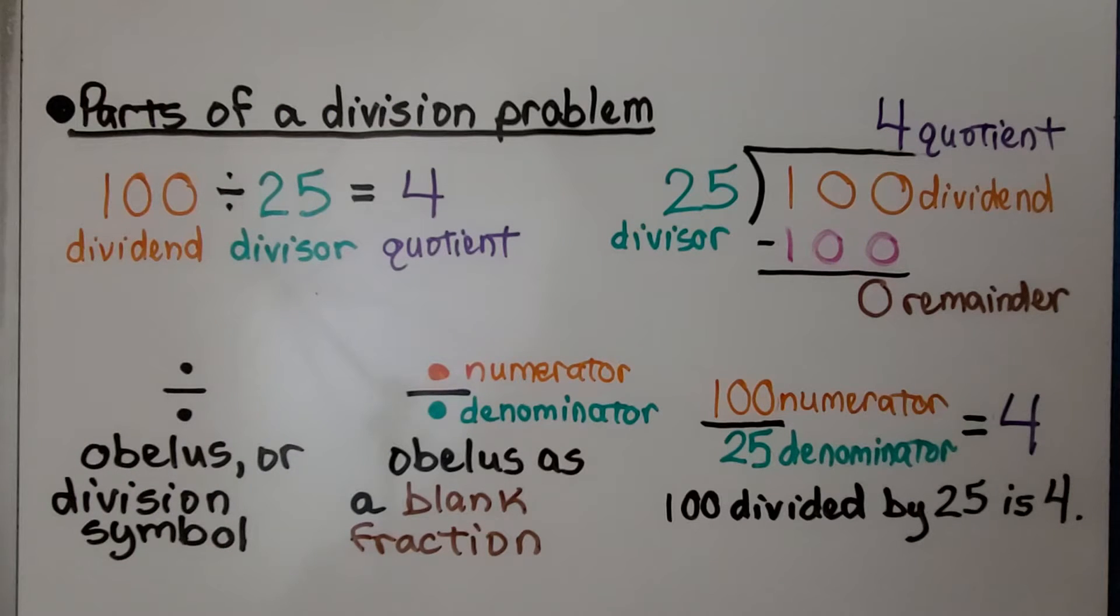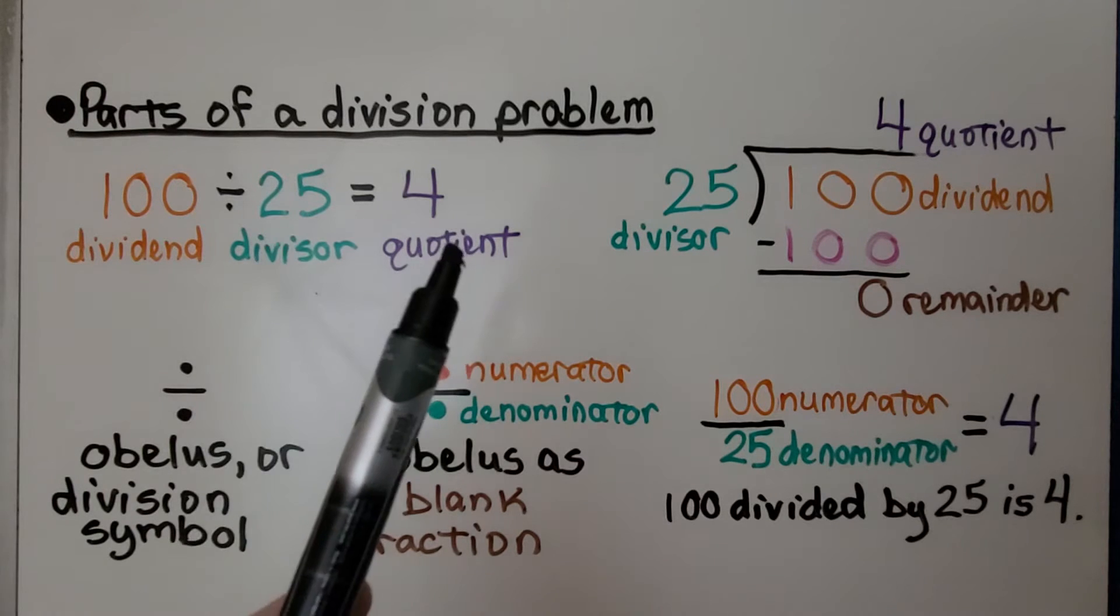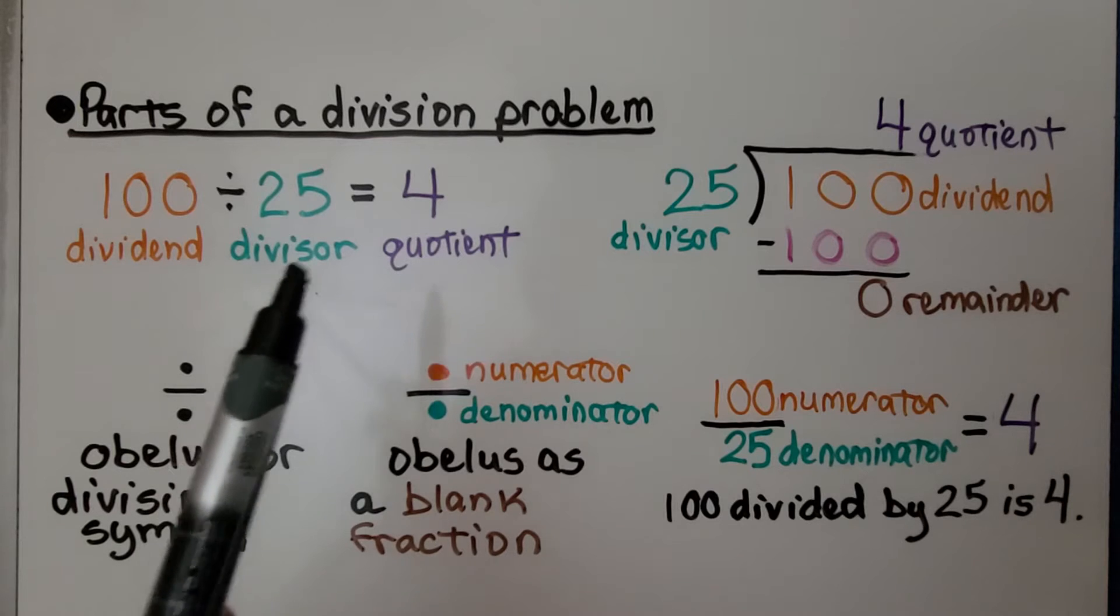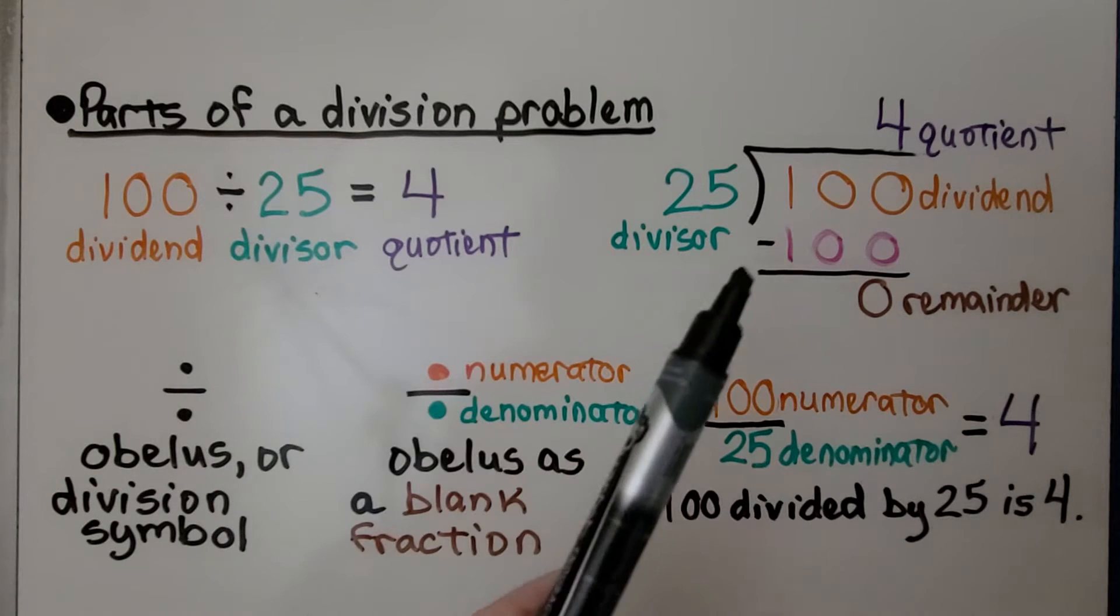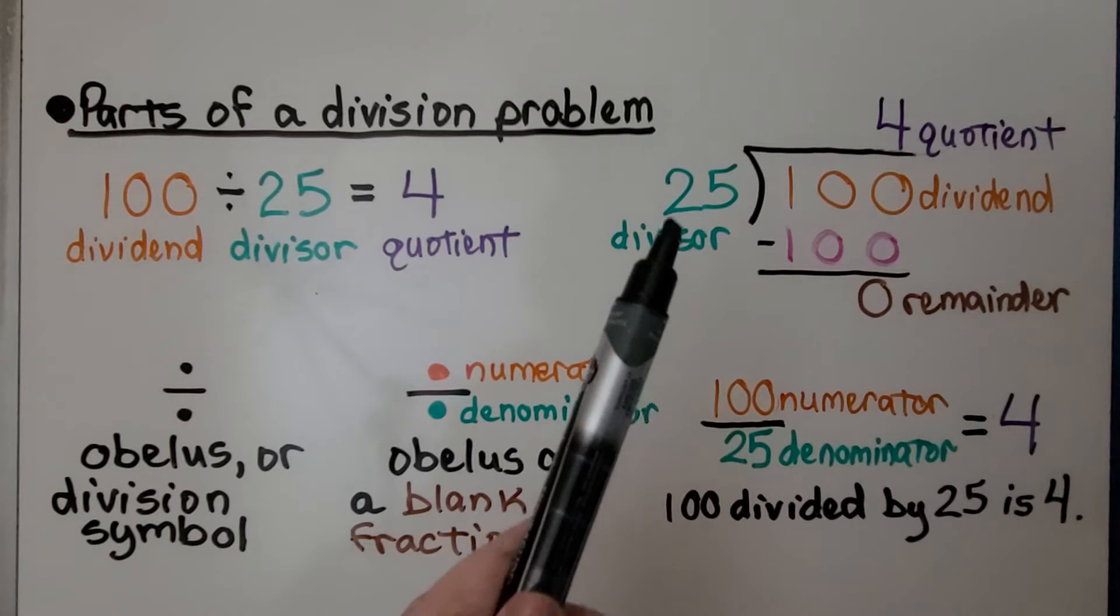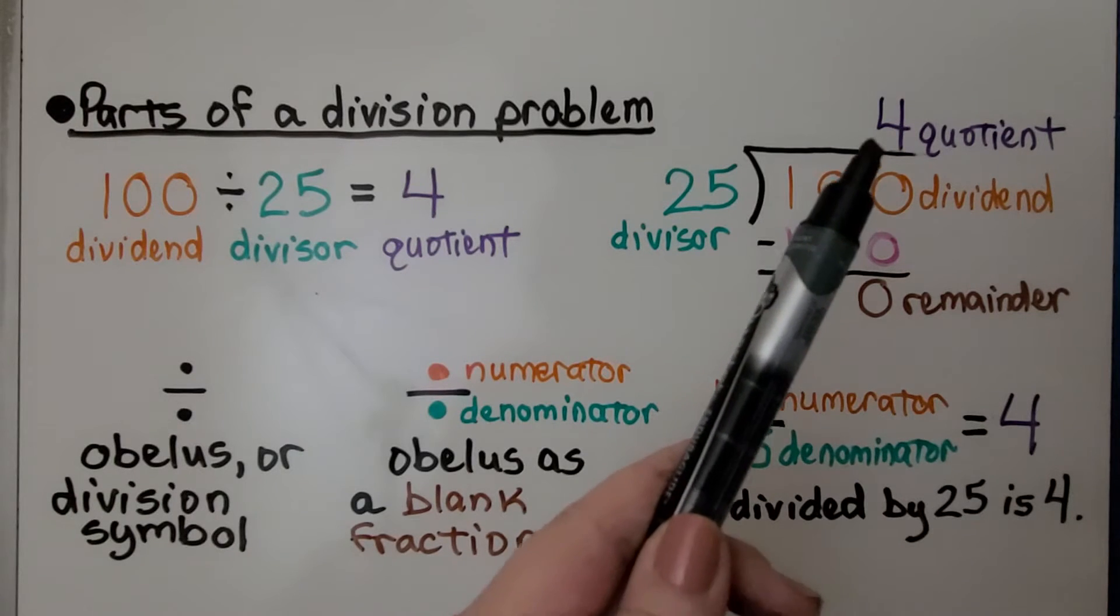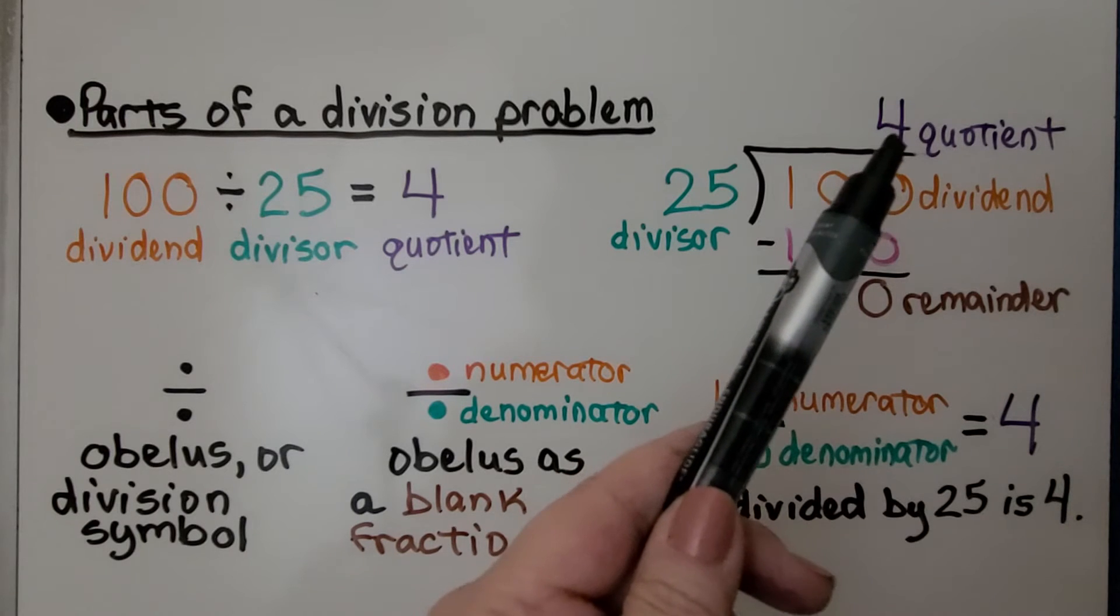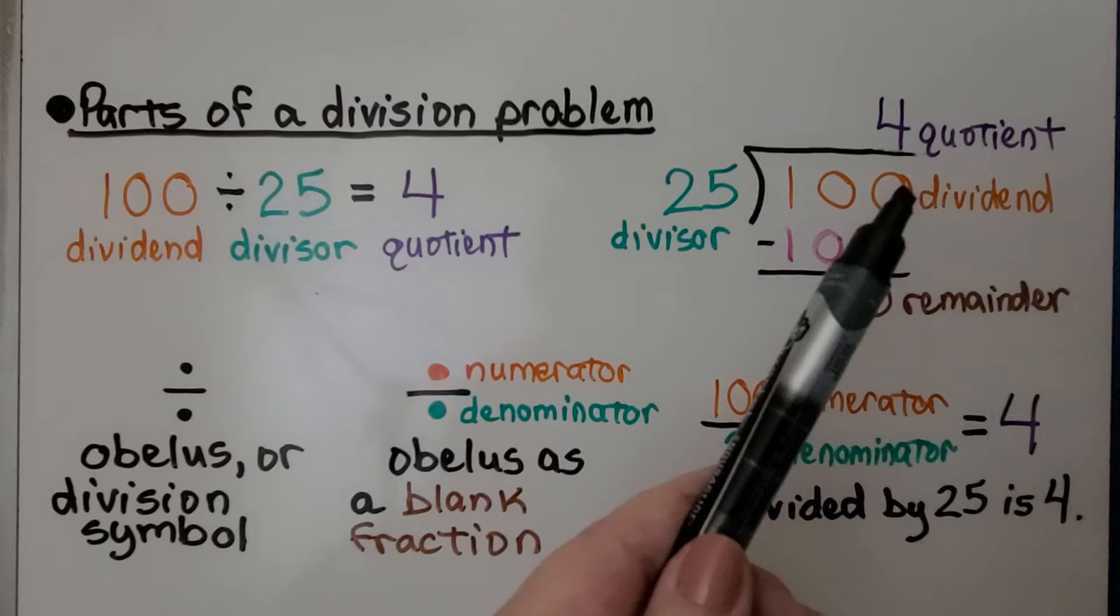Let's start by reviewing the parts of a division problem. Here we have 100 divided by 25 is equal to 4. 100 is the dividend, 25 is the divisor, and 4 is the quotient. When it's written like this, we have the divisor on the outside and the dividend on the inside and the quotient on top in the correct place value. This is 4 ones, so it's over the ones place of the 100.